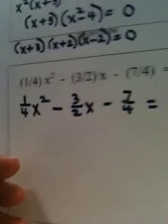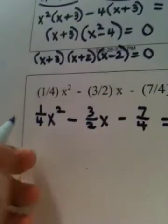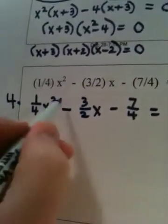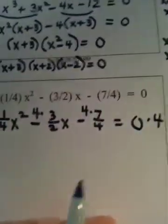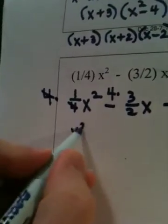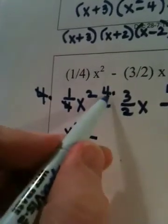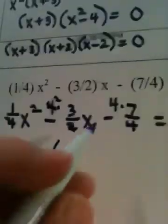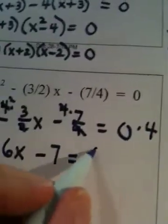And a number that they will all go into, that will make them all disappear, is the number 4. So if I multiply this equation by 4, I'm going to say bam, bam, bam, and bam. And by bam, I mean multiply by 4. The first term becomes x squared minus, look what happens to the next term. The 2 cancels into the 4 twice. 2 times 3 is 6, 6x. The 4s cancel, minus 7, and 0 times 4 is 0.